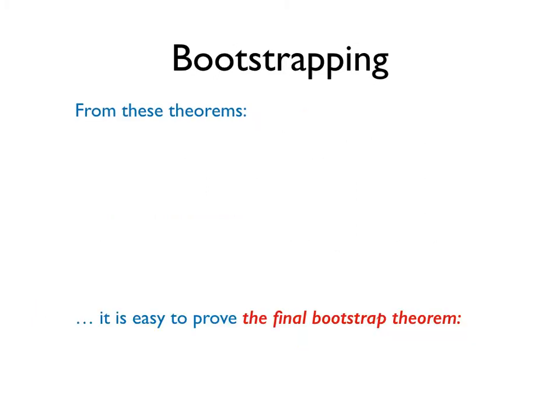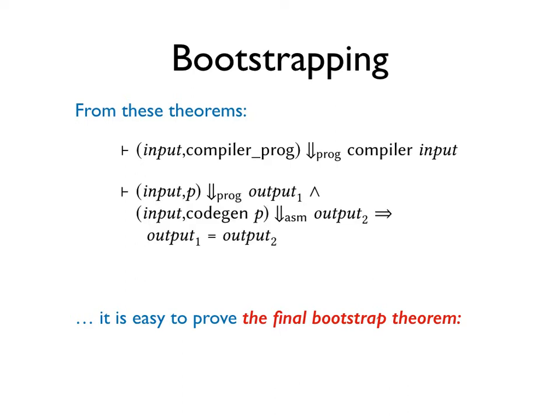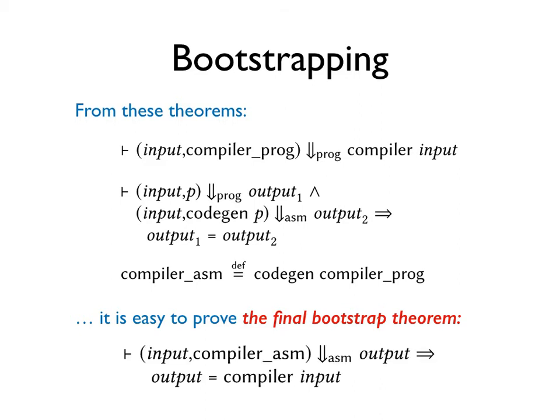Now we have all the parts we need. We have the correctness of compiler_PROG. We have the correctness of the code generator. And a definition of the compiler as assembly code. From these, it is easy to prove the final bootstrap theorem. As you can see, this follows by modus ponens of the top two theorems on this slide.